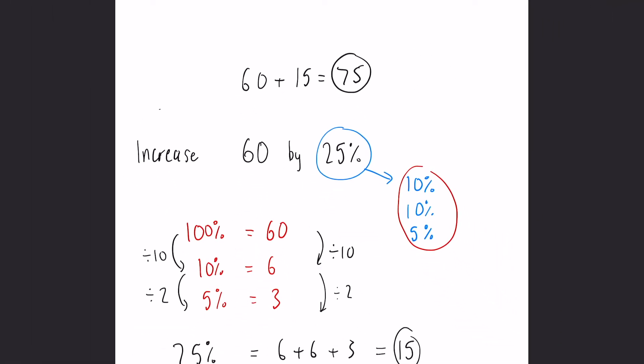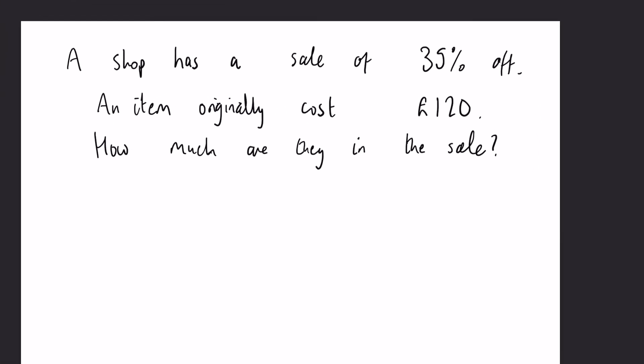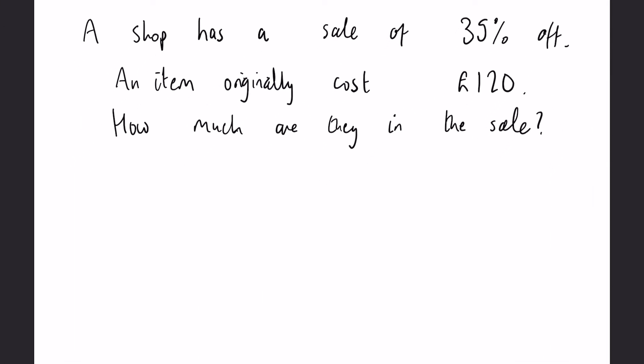Okay, now a more real-life example. The other type of question you may be asked in your exams: a shop has a sale of 35% off. An item originally costs 120 pounds. How much would it be in the sale? So this is an example of a decrease. Again, what we have to do is we set our 120 pounds as 100%.